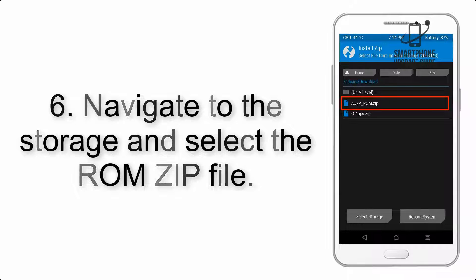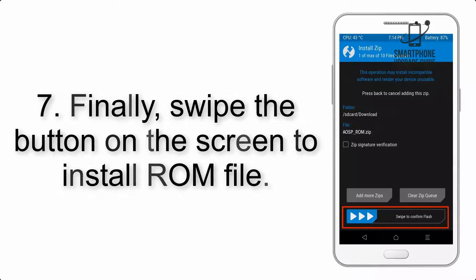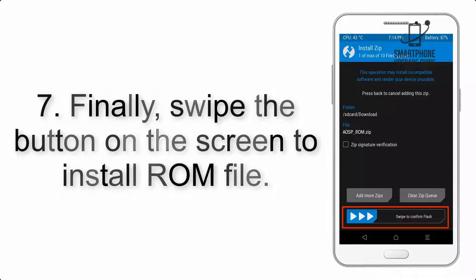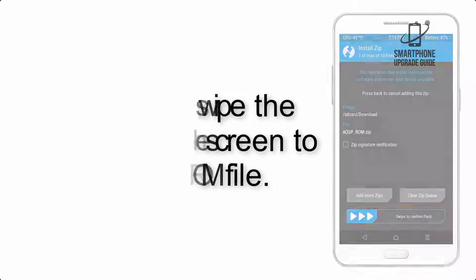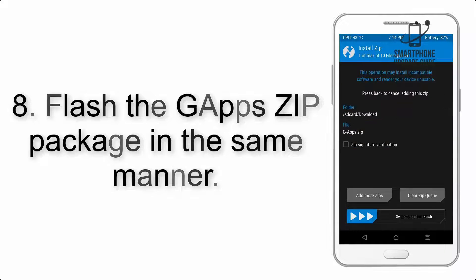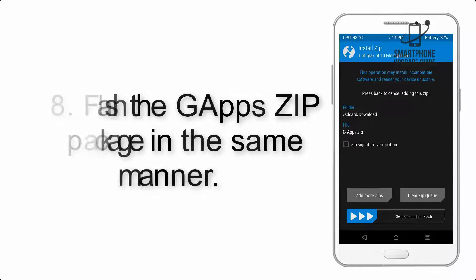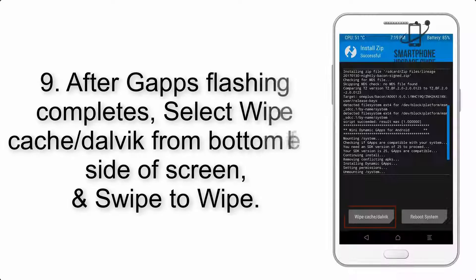Step 5: Go back to the recovery main screen and tap on the Install button. Step 6: Navigate to the storage and select the ROM zip file. Step 7: Finally, swipe the button on the screen to install the ROM file.